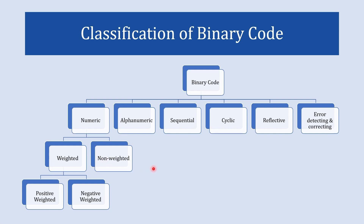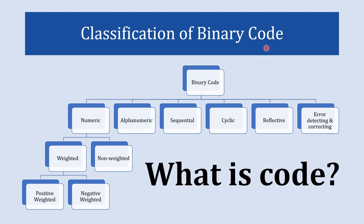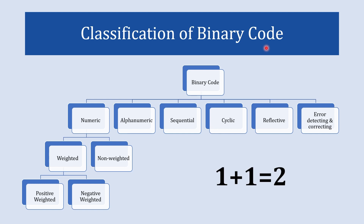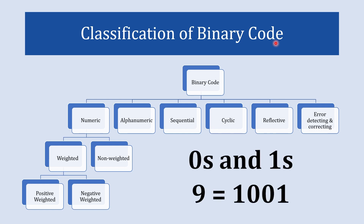Before we move ahead, there is an important thing we need to understand: what is a code? Basically, a code refers to a systematic arrangement of symbols, letters, or numbers used to represent some information, instruction, or data in a structured or encoded form. Now, binary code is the systematic arrangement of zeros and ones to represent some information.